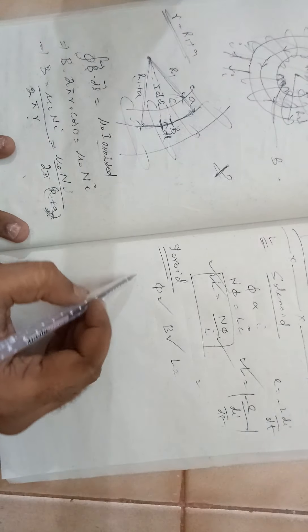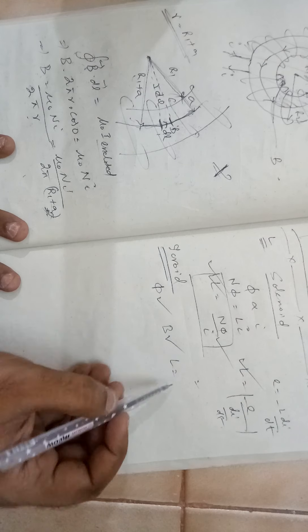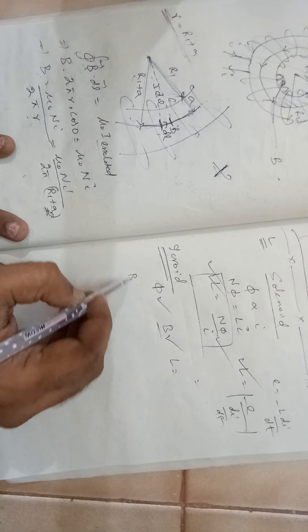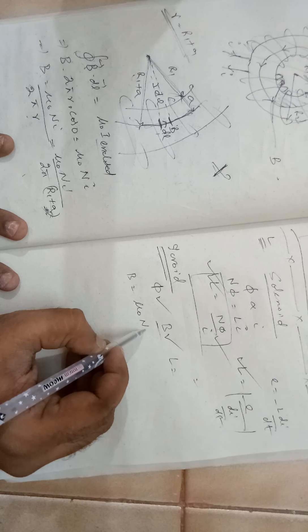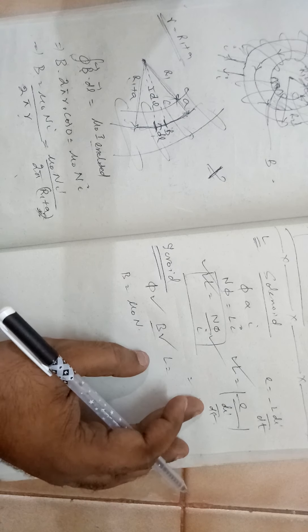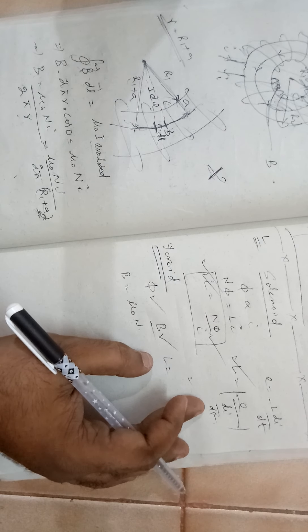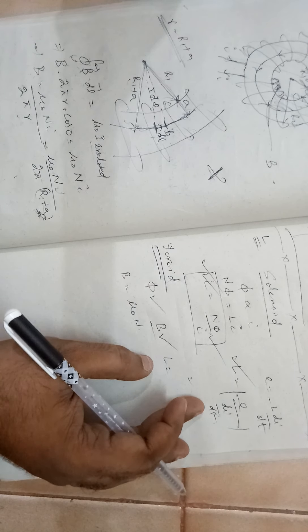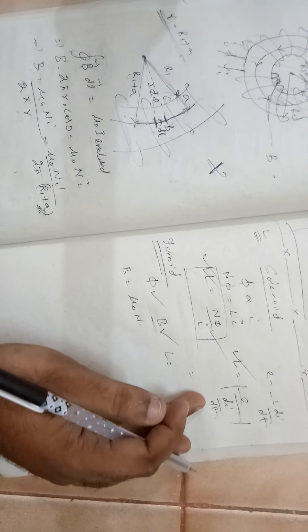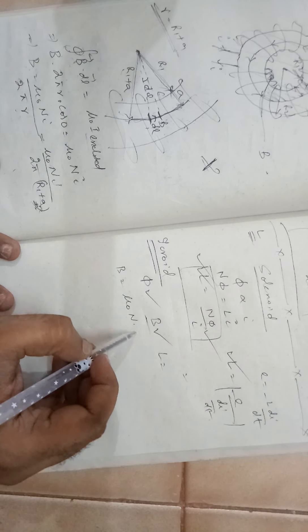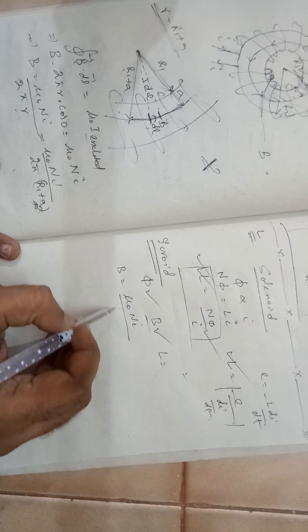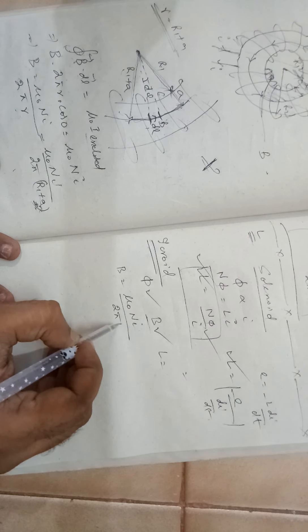The toroid magnetic field, we are taking it as mu naught N I by 2 pi R. The magnetic field of a toroid is mu naught N I by 2 pi R.